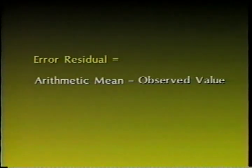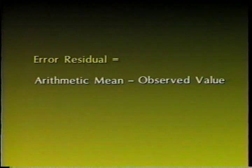The error residual is equal to the best value — which is the arithmetic mean of a series of observations — minus the observed value. The more complex the field data, that is, when we have multiple control stations, independent angle or distance ties, the more complex the task of correlating all the data and maintaining the correct geometric conditions within the survey while conducting the adjustment.